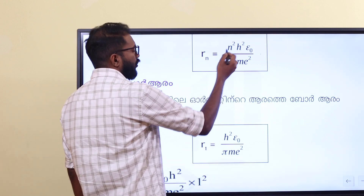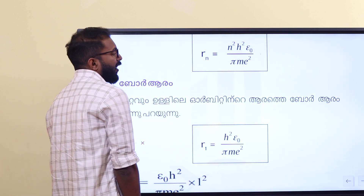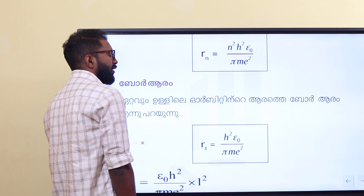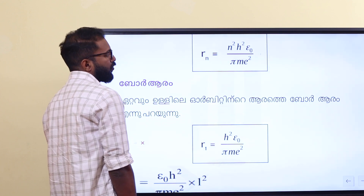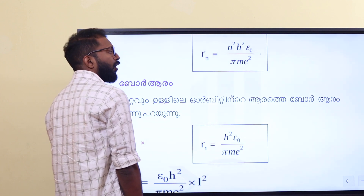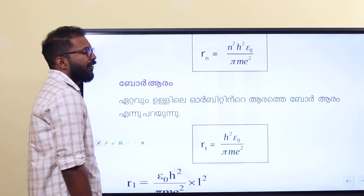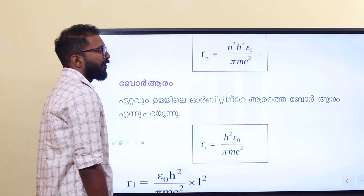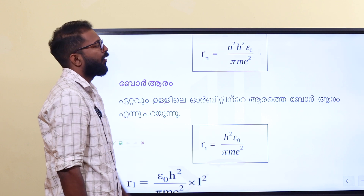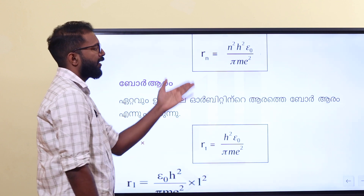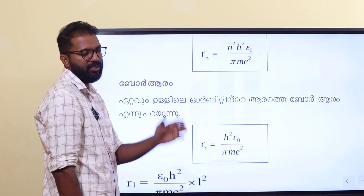For n equal to 1, 2, 3, 4... For h, it is a constant. For epsilon 0, we have a constant value: 8.854 × 10⁻¹². The mass of the electron is 9.1 × 10⁻³¹, and the charge is 1.6 × 10⁻¹⁹.